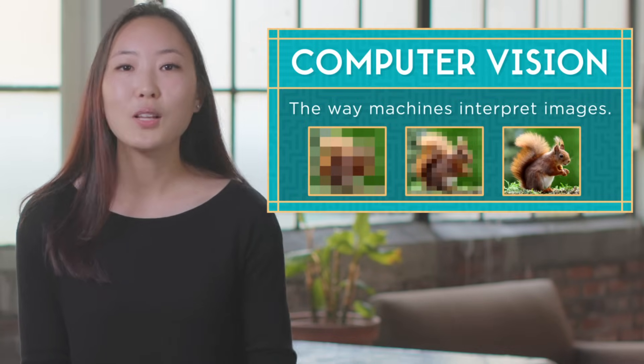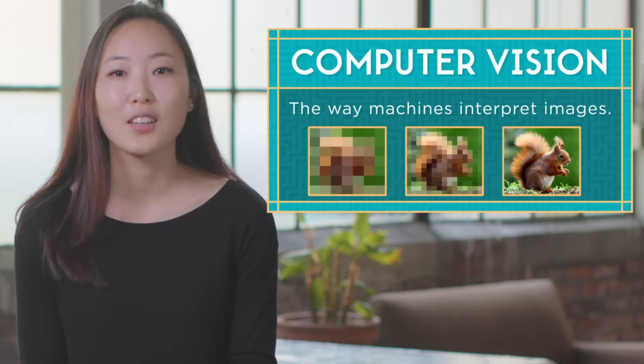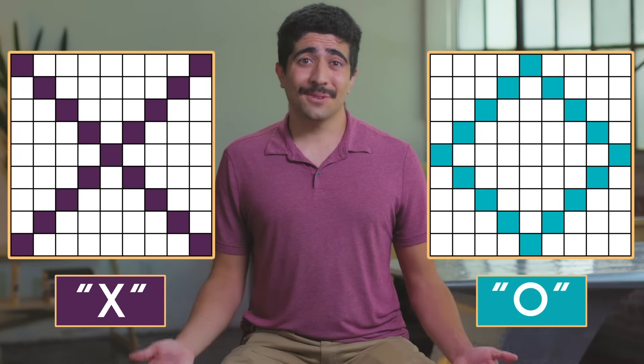Let's take a look at a simple example of how computers learn to see. Here are two shapes, an X and an O. At some point, you've learned the names for these shapes.